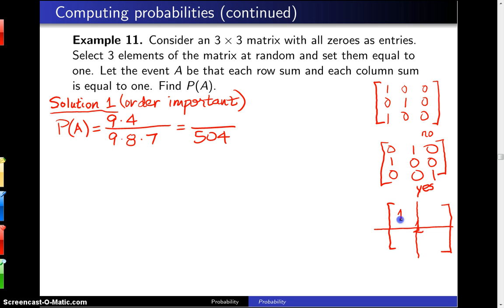So let's say we choose this position right here, second, that eliminates this entire row, this entire column. There's only one position remaining for that last choice. Nine times four is 36. 36 over 504, that reduces to 1/14.